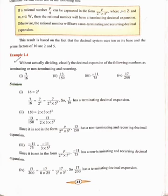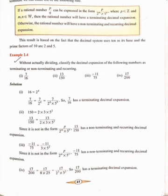Now let us see whether the given decimal expansion is terminating or non-terminating and recurring. I will give you a general formula: if a rational number p/q can be expressed in the form p divided by 2 raised to m into 5 raised to n, where p is an element of Z and m and n are elements of whole numbers, then the rational number will have a terminating decimal expansion. Otherwise, the rational number will have a non-terminating and recurring decimal expansion.